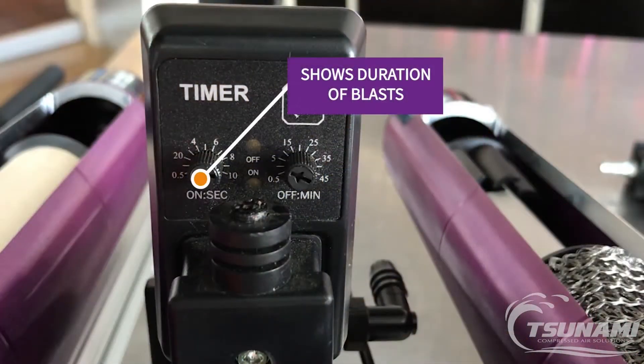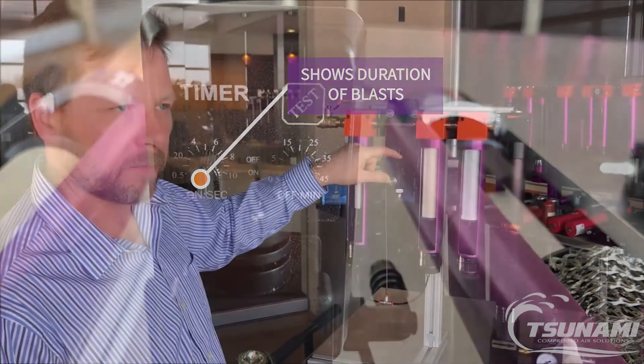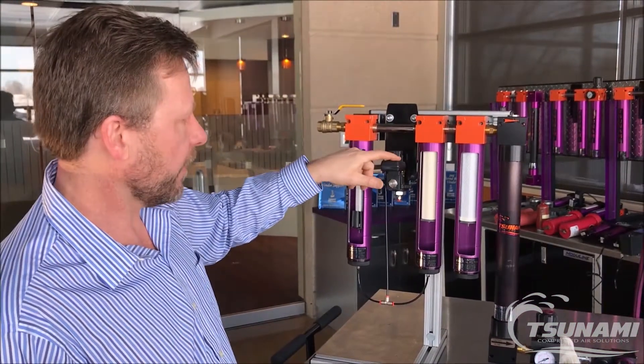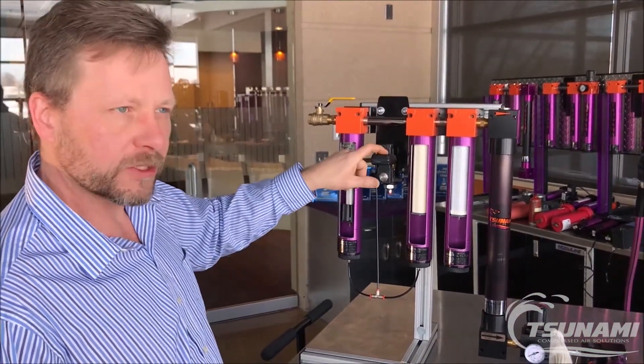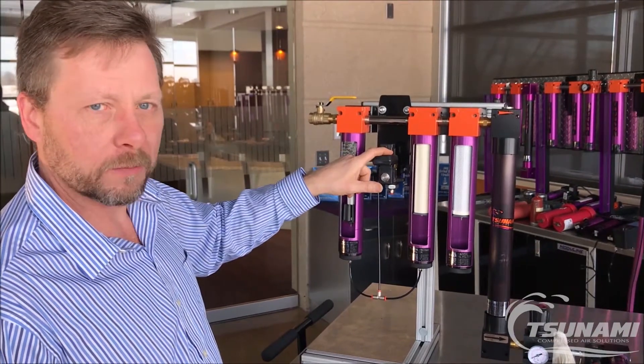The on time should always be somewhere between 0.5 and 1 seconds. You want short quick blasts, and if you have a lot of water and oil to remove, you just want to have those quick blasts more and more often.